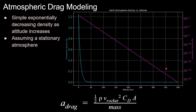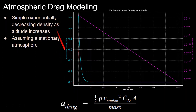We'll be going way deeper into atmospheric drag modeling and maximum dynamic pressure in the next video. As a sneak peek, here's a plot showing that as altitude increases, atmospheric density decreases exponentially. On a log scale on the right, we can see that it looks linear.